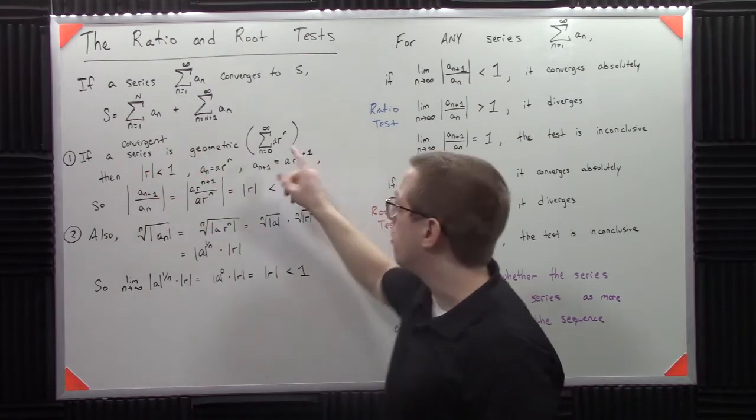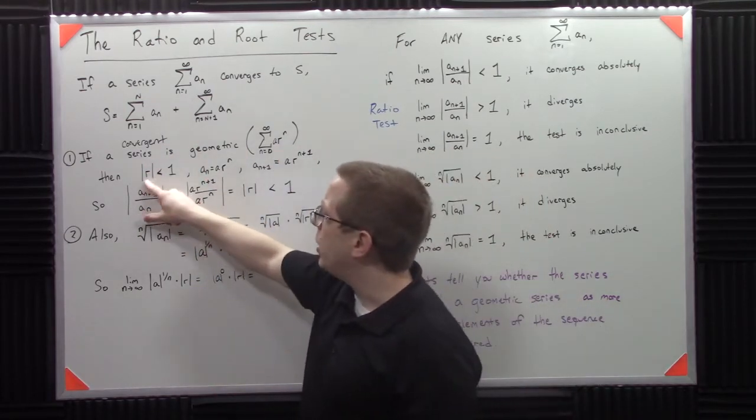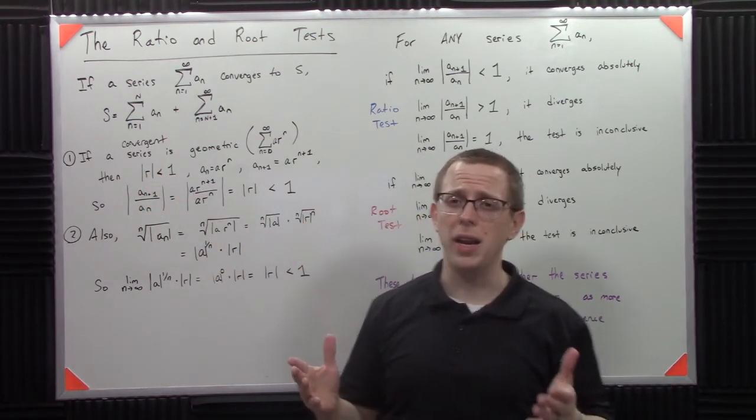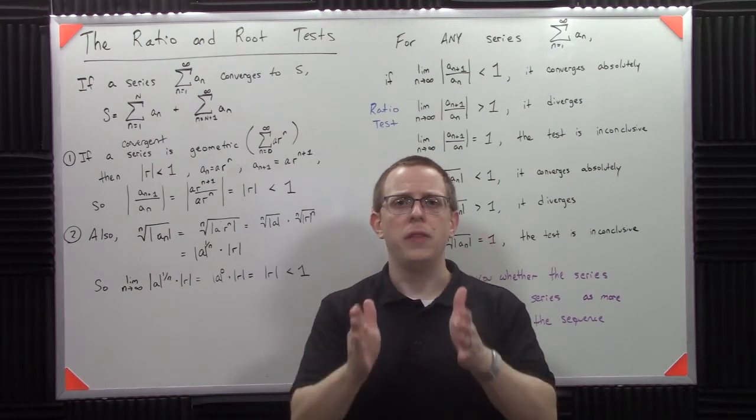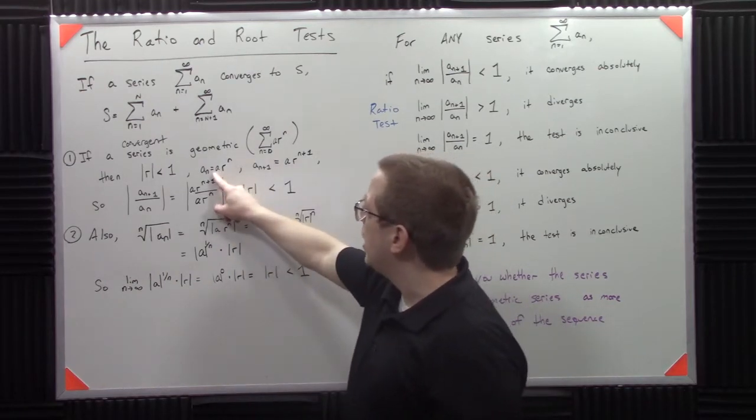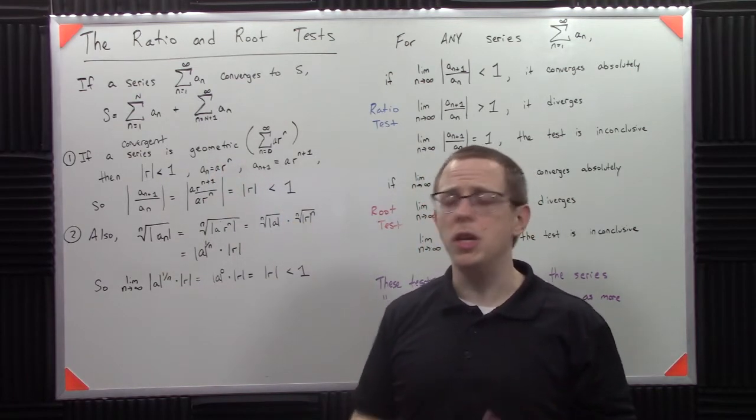When we think about a geometric series, if it's a convergent geometric series, it has this form AR to the N, and then we know that that R value that's, I call it a radius, it's really kind of not, but that R value is less than 1. The magnitude is less than 1. This is very confusing terminology but it's very common, so I'm going to keep using it.